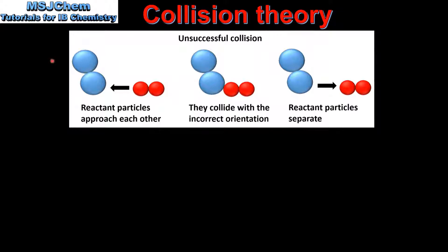Next we look at the difference between an unsuccessful and a successful collision. Note that in both these examples we assume that the reactant particles have sufficient energy to react. In our first example, which is an unsuccessful collision, the reactant particles approach each other however they collide with the incorrect orientation. No chemical reaction takes place and the reactant particles separate.